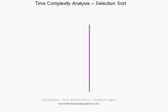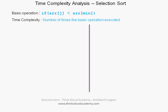Now let's look at the time complexity analysis for the selection sort algorithm. The basic operation in this case is the comparison: if array[j] is less than array[min]. Time complexity is generally the number of times the basic operation is executed. The number of times we execute this comparison determines the time complexity. There are two for loops — the inner for loop goes from i plus 1 to n minus 1, and the outer for loop goes from 0 to n minus 2. We can represent the number of times the basic operation executes as a summation: i from 0 to n minus 2, j from i plus 1 to n minus 1, of one basic operation.